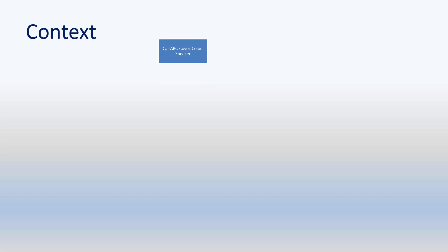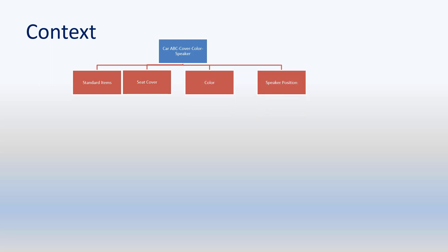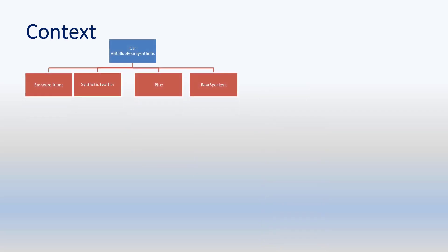I will explain the importance of Variant Configuration using a simple example followed by a business scenario showing how Variant Configuration works in the SAP HANA environment. Consider the case of an automobile with all standard components plus additional features as options. For this example, options offered are: color of the car, type of seat covers, and position of speakers for the musical system. Seat covers can be synthetic leather or pure leather, body color can be picked from 36 colors, and speaker position can be front, rear, or both. What happens when a customer asks for synthetic leather car seats, blue color body, and rear speakers?